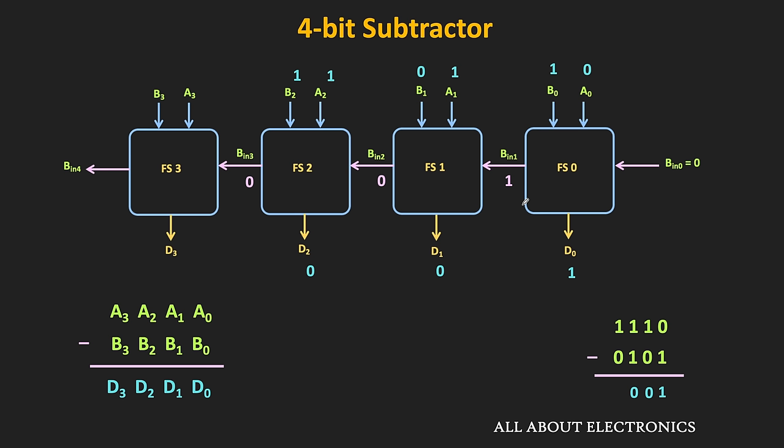In the final block, A3 is equal to 1, B3 is equal to 0, and the incoming borrow is also equal to 0. That means 1 minus 0 equals 1, and the outgoing borrow is equal to 0. The output is equal to 1001. So in this way, by cascading 4 such full subtractor blocks, we can easily design this 4-bit subtractor.